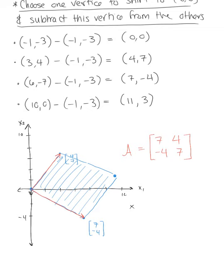And so we're ready to compute the determinant to find the area. We have that the area by our theorem is equal to the absolute value of the determinant of A. So this will be 7 times 7 is 49 minus a -16, so plus 16, which leaves us with 65. We should say 65 square units.